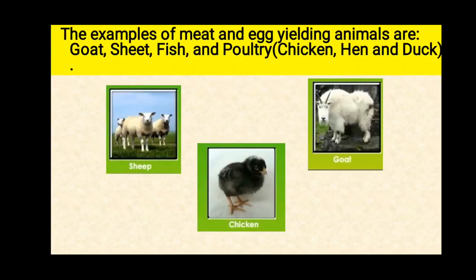The examples of meat and egg yielding animals are goat, sheep, fish, and poultry — that is chicken, hen and duck. Out of these animals, goat, sheep and fish give us meat, whereas poultry gives us meat as well as eggs.